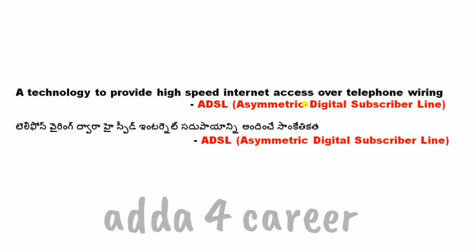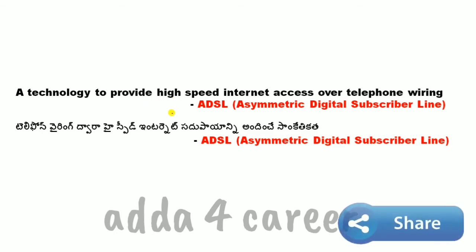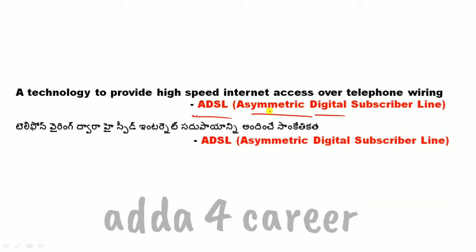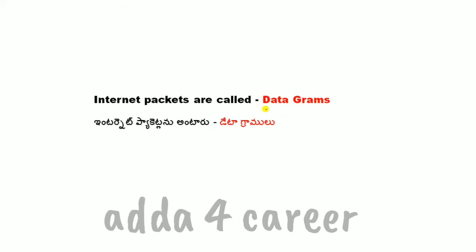Technology to provide high speed internet access over telephone wiring is ADSL — Asymmetric Digital Subscriber Line. Internet packets are called datagrams.